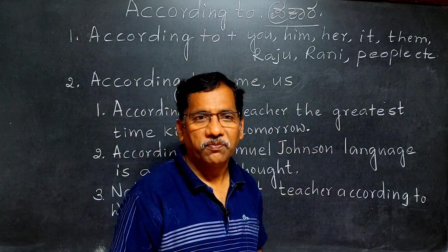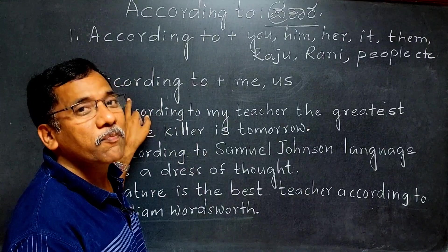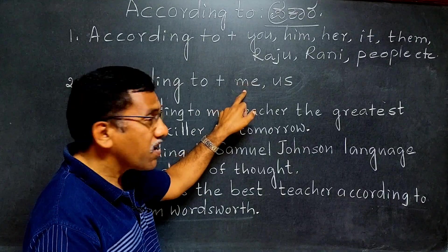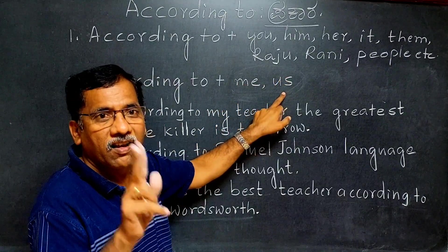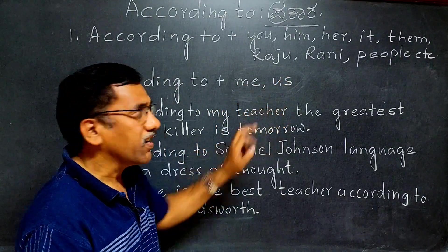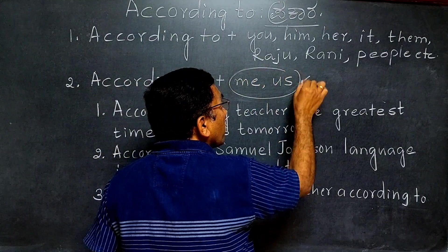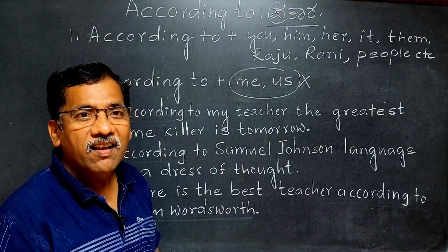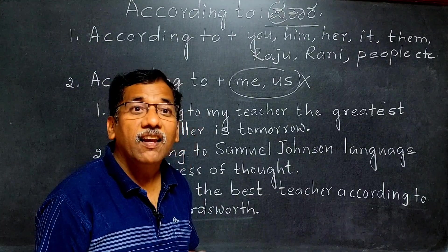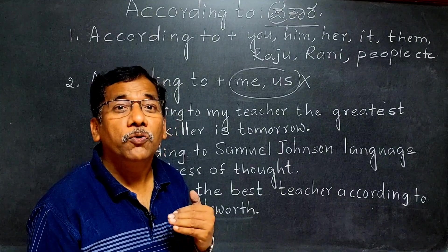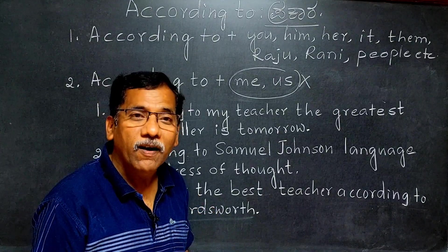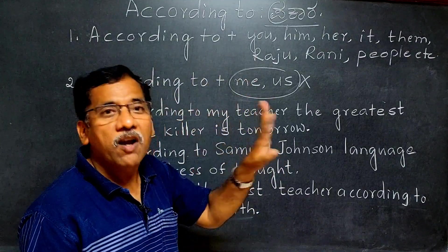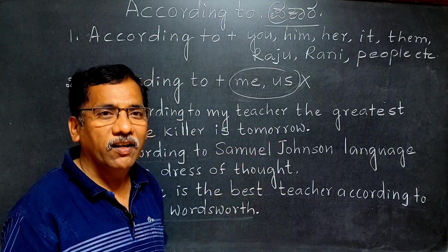According to people — janara prakara. Now, a very important point: after 'according to,' the pronouns 'me' and 'us' should never be used. So 'according to me' and 'according to us' are incorrect and should be avoided in English.